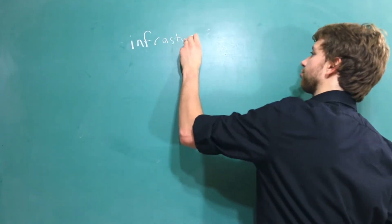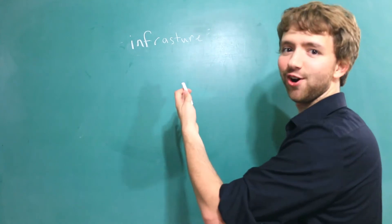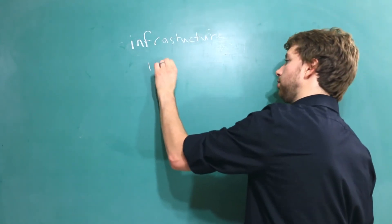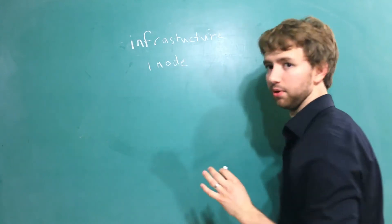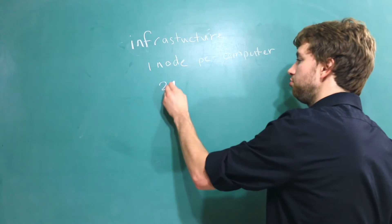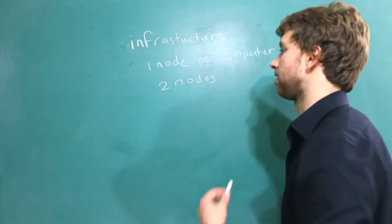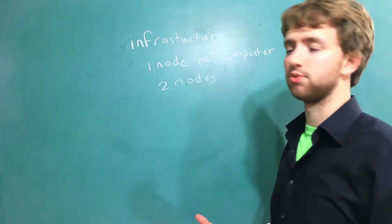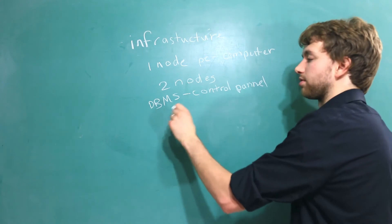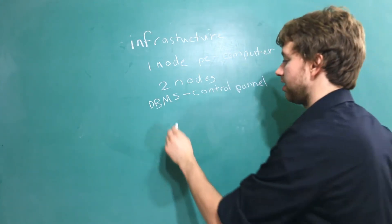Let's first talk about our infrastructure. We are going to have one node per computer, so we're just going to keep this simple. And in order for this to really work, we're going to need at least two nodes. We're also going to need another computer or a virtual machine in this case for our database management system. Consider this your control panel.